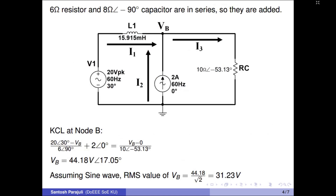Since resistor and capacitor are in series, they are added. Sum of 6 angle 0 and 8 angle minus 90 is 10 angle minus 53.13. At node B, I1 plus I2 is equal to I3. I1 is equal to 20 angle 30 minus VB, over the resistance of the inductor, that is 6 angle plus 90. I3 is VB minus 0, over the combined resistance of 10 angle minus 53.13.